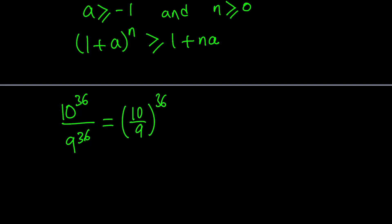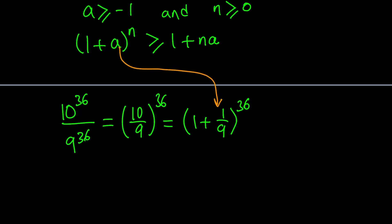Now 10 over 9 is an improper fraction, so we can write it as 1 plus 1/9, all to the power 36. At this point we're going to use Bernoulli's inequality. In my inequality, a is equal to 1/9 and n is equal to 36.